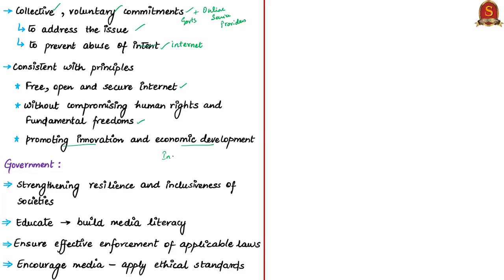On this basis, the governments of supporting countries committed to the following: first, to counter the drivers of terrorism and violent extremism by strengthening the resilience and inclusiveness of societies, enabling them to resist terrorist and violent extremist ideologies through education and building media literacy to counter distorted terrorist narratives. Second, to ensure effective enforcement of applicable laws that prohibit the production or dissemination of terrorist and violent extremist content, in a manner consistent with the rule of law and international human rights law, including freedom of expression.